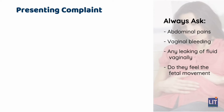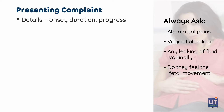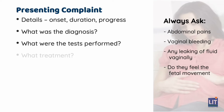Some common HPCs can include abdominal pain, vaginal bleeding, leaking of fluid from the vagina, and reduction of fetal movements. We need to know the details of the problem, such as the onset, duration, and if this is the first time or she had experienced similar episodes, and if so, what was the diagnosis then?